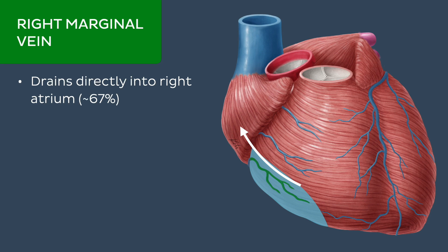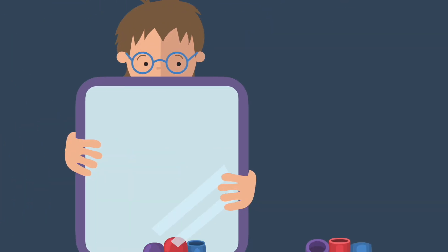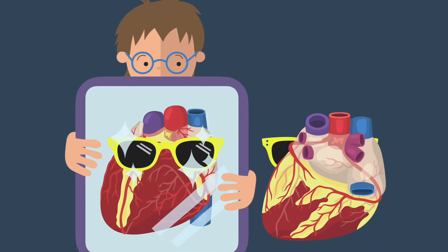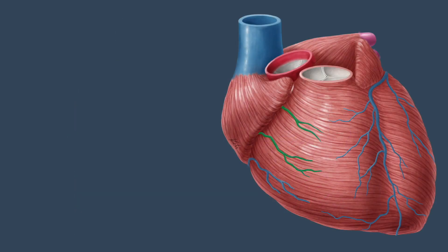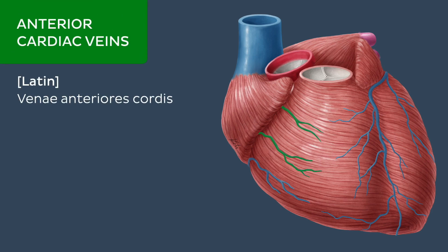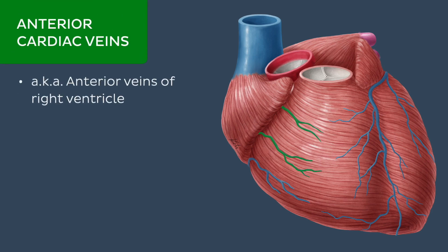That takes care of all the tributaries of the coronary sinus. You might have noticed that we haven't yet mentioned these veins on the anterior view of the heart, which are the anterior cardiac veins, also known as the anterior veins of the right ventricle. These veins do not drain into the coronary sinus. Instead, they collect deoxygenated blood from the anterior part of the right ventricle and drain directly into the right atrium.